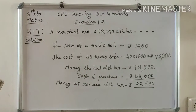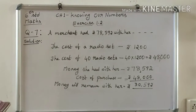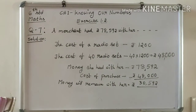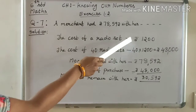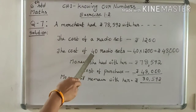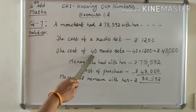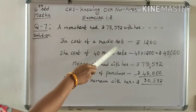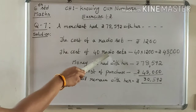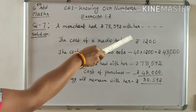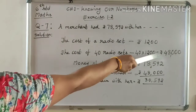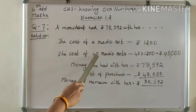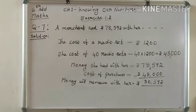She wants to purchase radios. 1 radio set costs Rs. 1,200. She purchased 40 radio sets, so how much is that? We multiply 40 by Rs. 1,200. After multiplication, we get Rs. 48,000 — that is the cost of 40 radio sets.